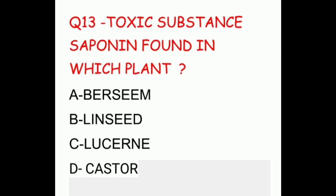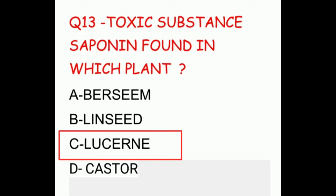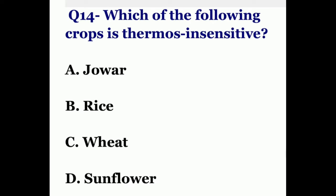Question thirteen: the toxic substance saponin is found in which plant? The options are berseem, linseed, lucerne, or castor. The correct answer is lucerne.